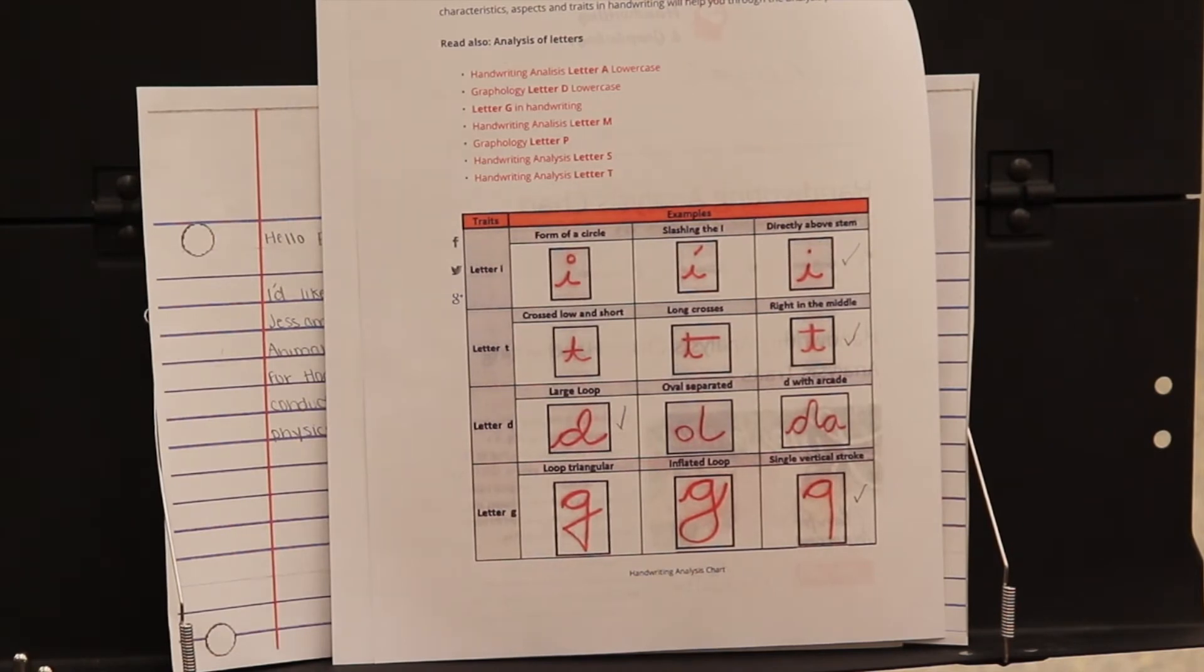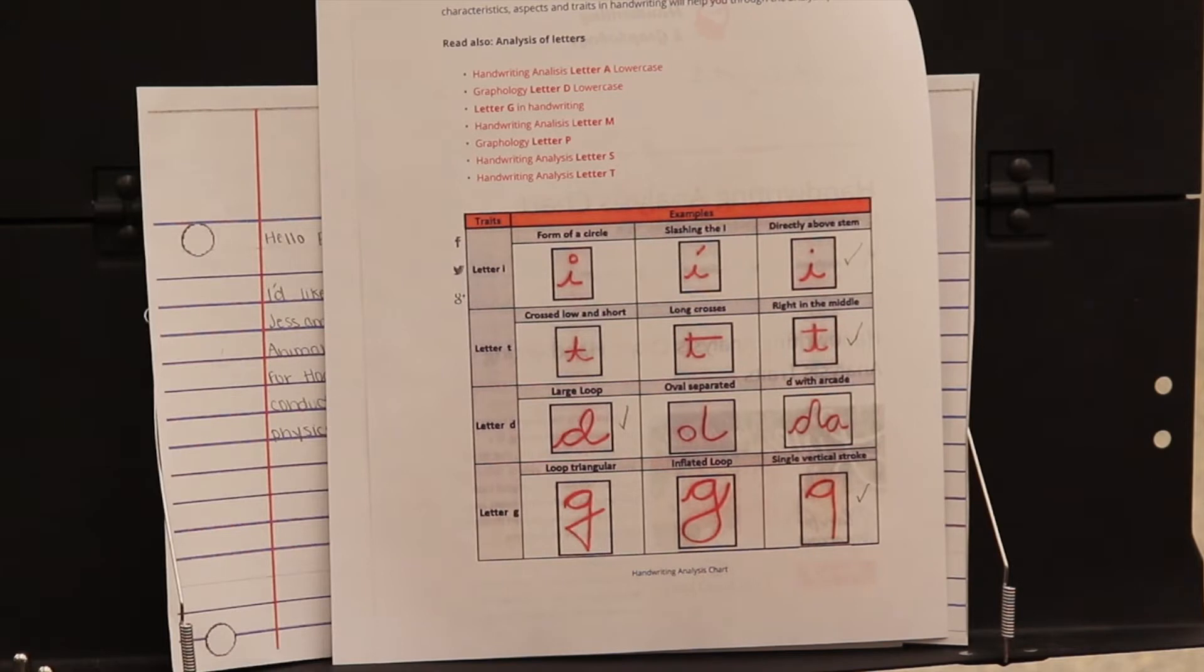Her i's have dots directly above the stem. Her crosses to the T are right in the middle. She makes large loops for her D's, but if you look at her G's, it's like a single vertical stroke with no loops.